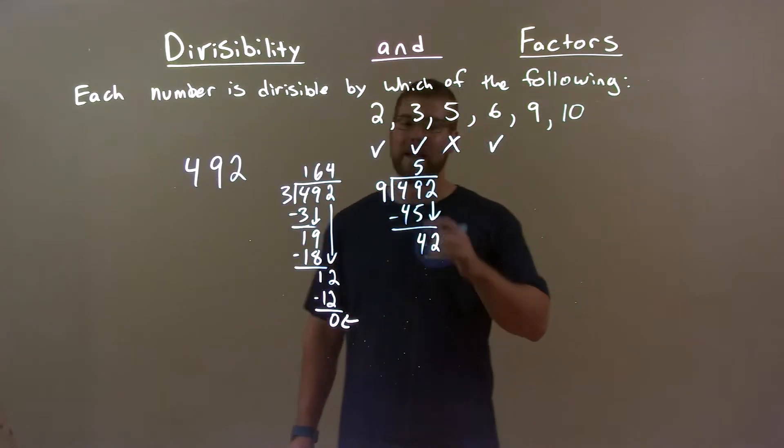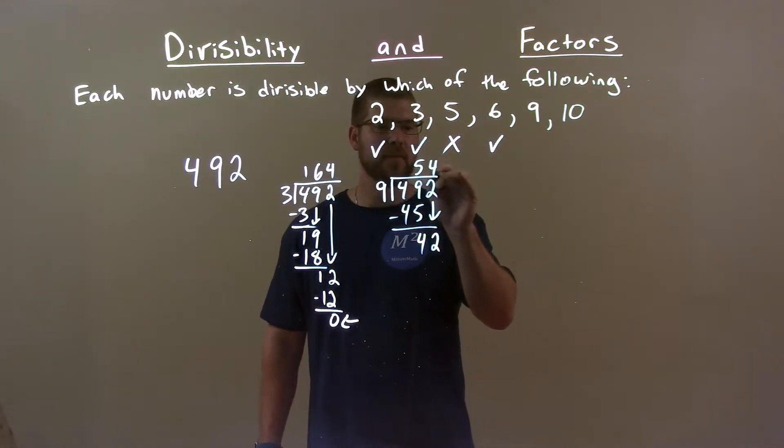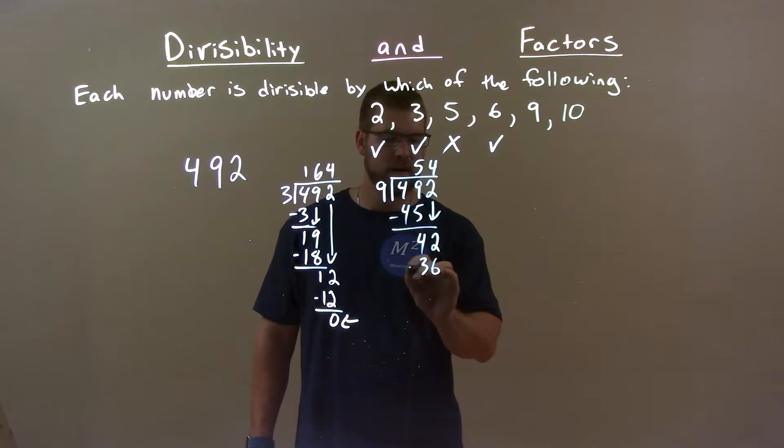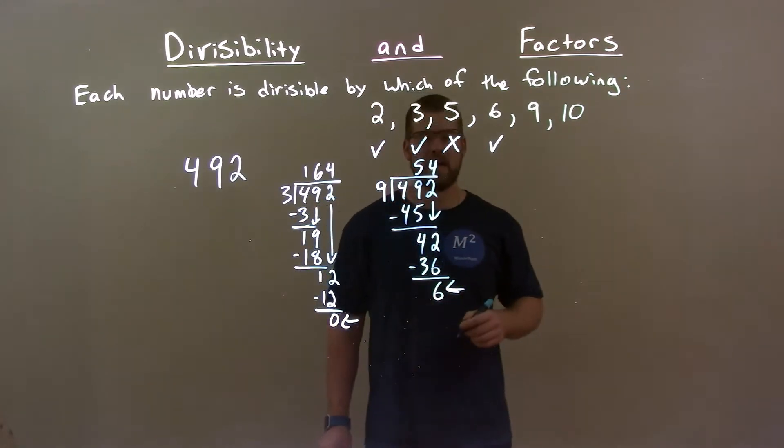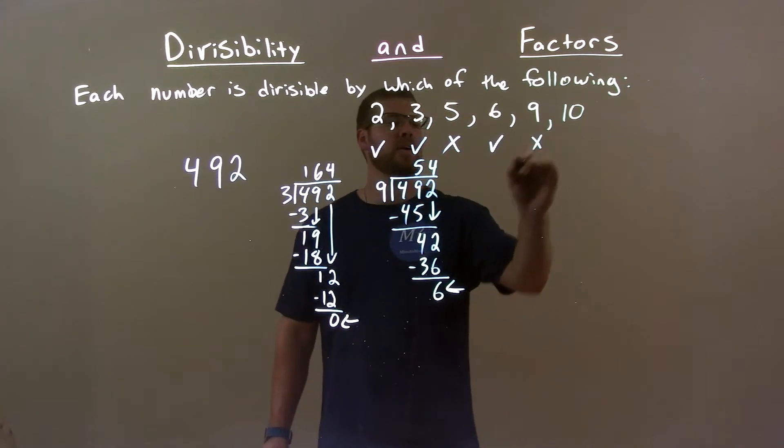9 goes into 42 not evenly. 4 times. 4 times 9 is 36. Subtract the 2. We got 6 left over. Since we have a remainder here, 9 will not work.